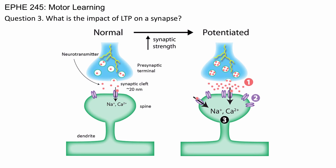The two key things to focus on: first, in the potentiated synapse, more neurotransmitter is being released — you can see that in terms of the amount of neurotransmitter released into the synapse here versus here. The other thing to note is the difference in the number of receptors. There are more receptors on the potentiated site, and fewer on the unpotentiated postsynaptic neuron.